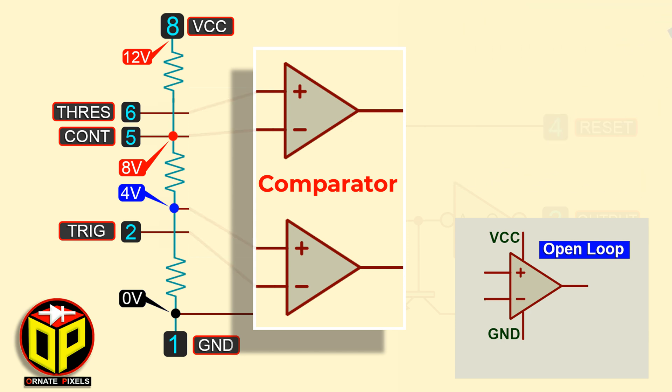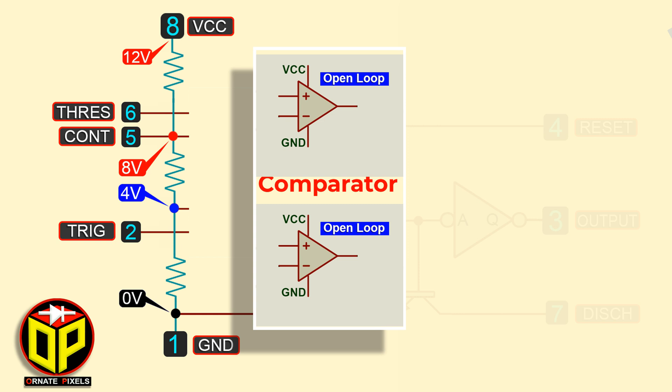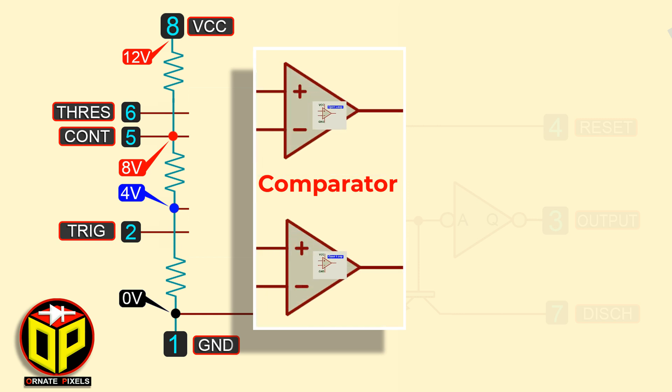Between the 555 IC, two operational amplifiers are in open-loop state. Here, this is comparator 1 and this is comparator 2.